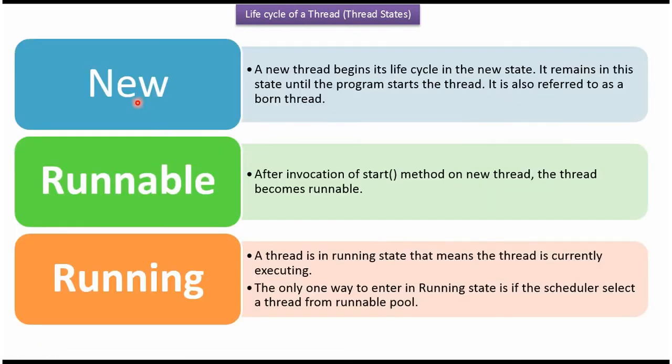The initial state of a thread is the New state, and the thread remains in this state until the program starts the thread. After invocation of the start method on the new thread, the thread becomes Runnable. A thread in the Running state means it is currently executing. The only way to enter the Running state is if the thread scheduler selects a thread from the Runnable pool.